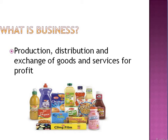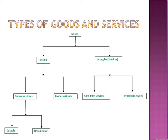Let's look into the various types of goods and services we have. We have tangible goods, and we have intangible goods that we call services. Under tangible goods, we have consumer goods — those goods that we consumers use in general — and others are producer goods that are only used by businessmen and manufacturers.